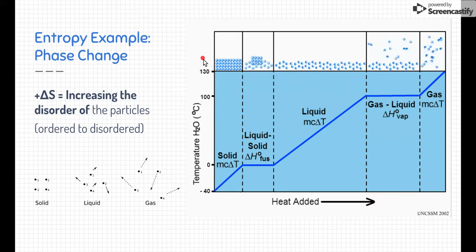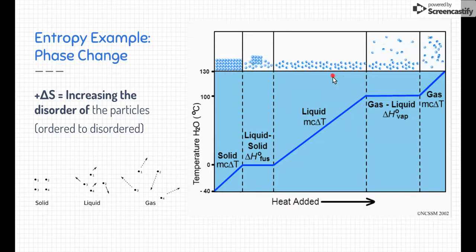They're very close together, and they just kind of wiggle and jiggle in place. But as we get more towards the right, here we have liquids that are a little bit more flowy, moving around each other. And if we go from a liquid to a gas, you can see a really big increase in the disorder of the system. So entropy increases going from a solid to a gas.